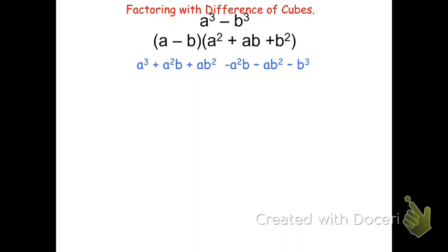Now this doesn't quite look like the top, it's got a lot more going on. However, I see some things that are going to cancel. a²b cancels with -a²b, and ab² cancels with -ab². It leaves me a³ and -b³, hence a³ - b³.